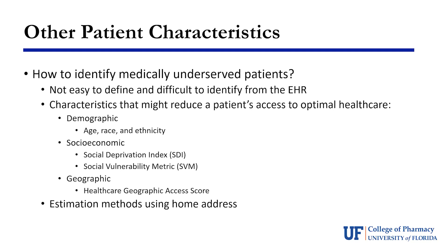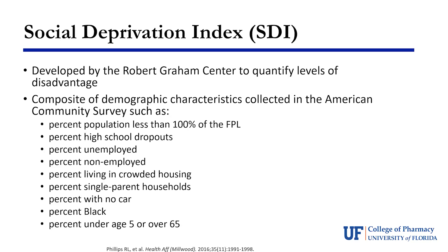The first measure we're using is the Social Deprivation Index, or SDI, developed by the Robert Graham Center to quantify levels of disadvantage. They use data from the American Community Survey — part of the U.S. Census — to calculate scores by area based on specific characteristics. The primary factors include percentage of population below 100% of the federal poverty line, employment data, education, housing, and some demographics around age and race.